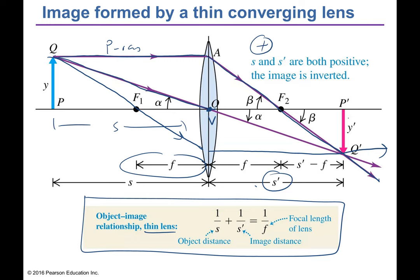The lens equation — 1 over S plus 1 over S prime equals 1 over F — is the same as the mirror equation. Real images form in the back of the lens (positive side) and are inverted. Y prime is the image height and Y is the object height. This holds as long as the object distance is greater than the focal length.